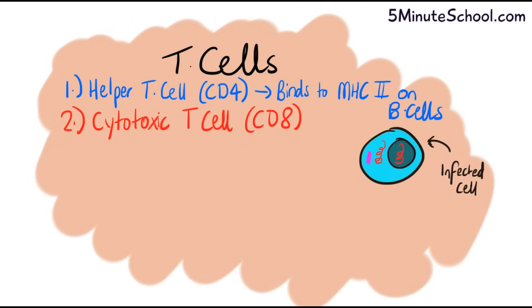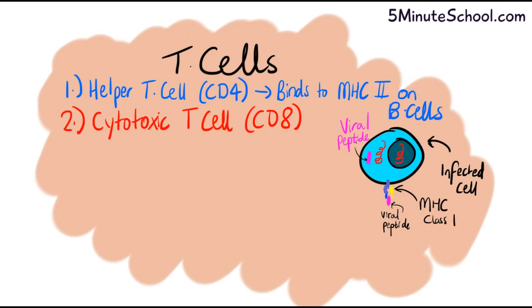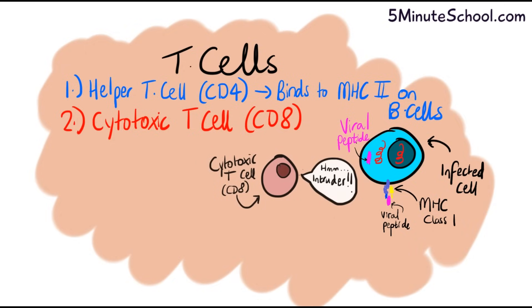Other types of T cells include the cytotoxic T cell, also known as CD8 T cells. In the case of CD8 T cells, imagine you have a cell infected by a virus — it contains viral DNA and viral mRNA, causing it to produce viral proteins and peptides. Since all nucleated cells have MHC class 1 on their membrane, these viral proteins are presented by the MHC class 1 molecule on the surface of the infected cell — essentially a warning signal showing the infected proteins on its membrane.